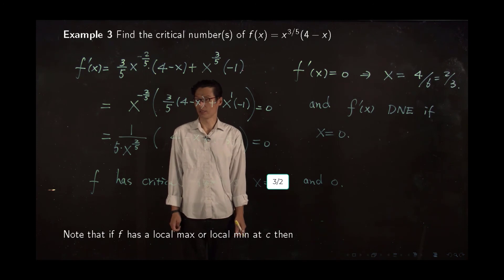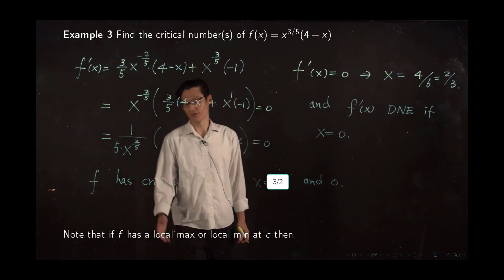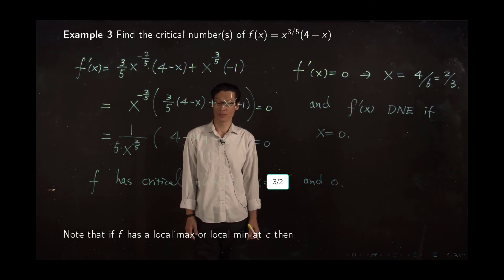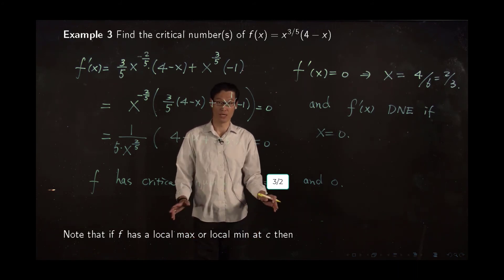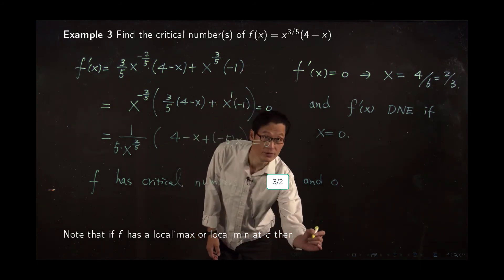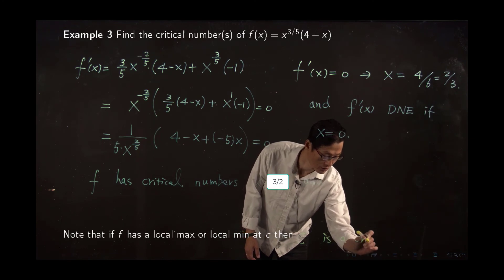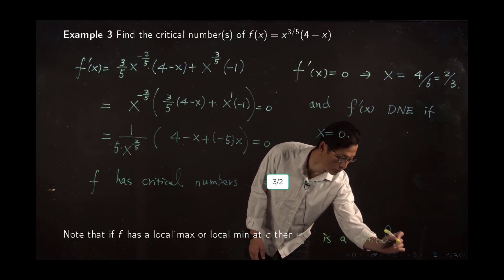Okay, and one more quick remark. If your function has local minimum and local maximum, then automatically your function has critical number. Then c is a critical number.